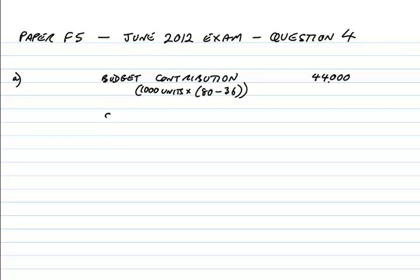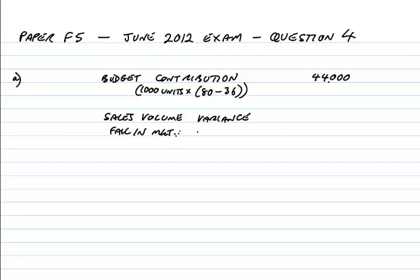Let's look at the sales volume variance. We did sell fewer units — 960 against a budget of 1000 — so we'd expect less contribution. Because of the market decline information, we're going to split it. If the market fell by 10%, we'd expect to fall by 10%. Since we budgeted on 1000, a 10% fall means we'd expect to lose sales of 100 units. At standard contribution of 44, we'd expect to lose 4,400 — that's adverse. That effectively is our planning variance.